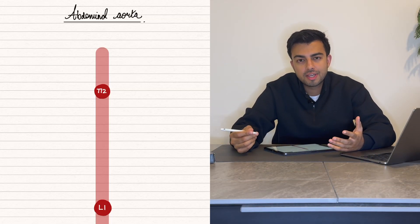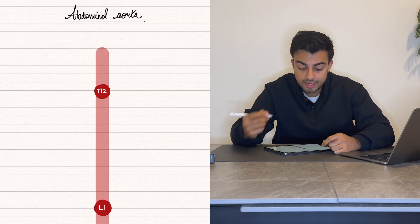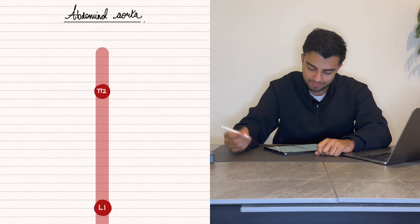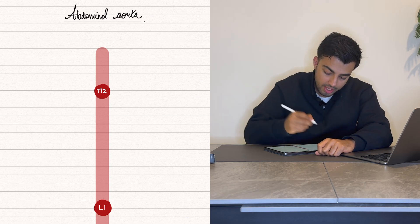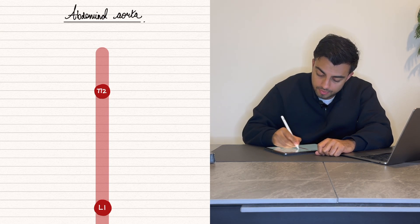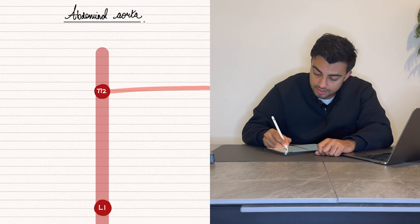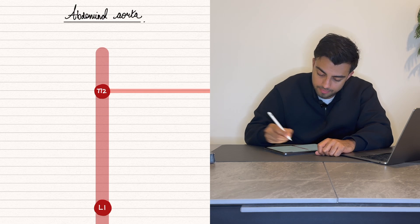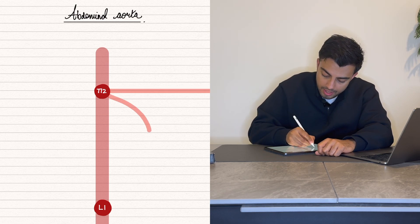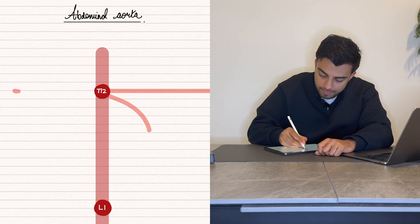Hey guys, welcome to MRCS Hacks. Today we're going to be looking at the abdominal aorta and its first branch, the celiac trunk, at the level of T12. There are three main branches of the celiac trunk: the splenic artery, the left gastric artery, and the common hepatic artery.